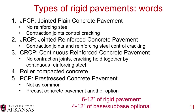Rigid pavement thickness is typically 6 to 12 inches — sometimes more, sometimes less, with roller compacted concrete getting down to about 3 to 4 inches. The base and sub-base are optional, at 4 to 12 inches each.